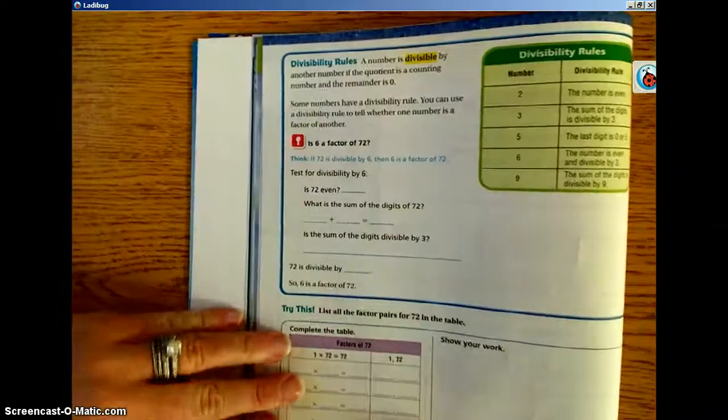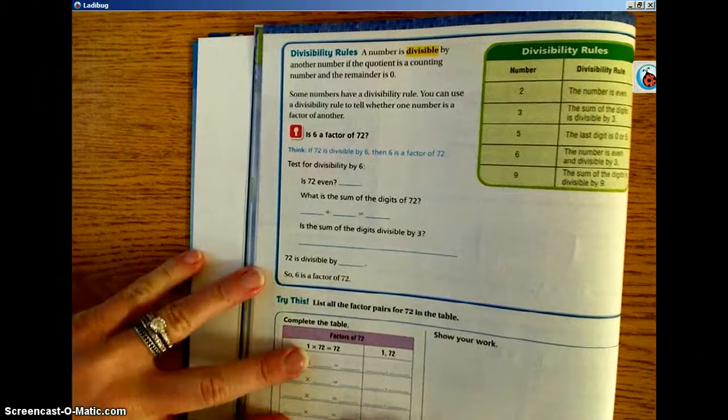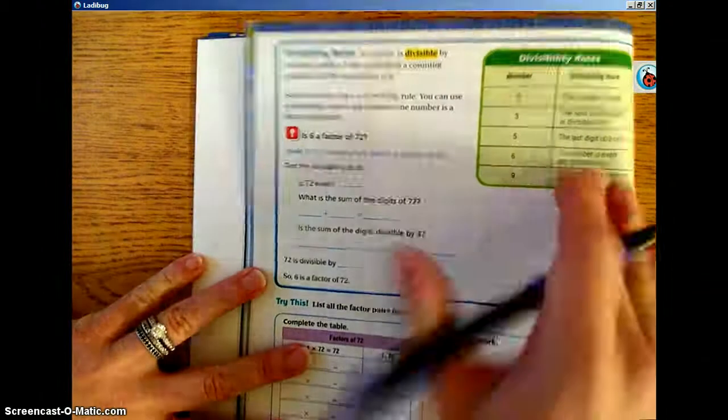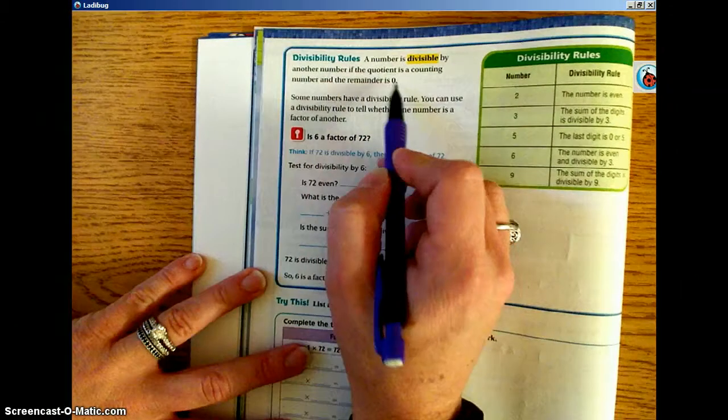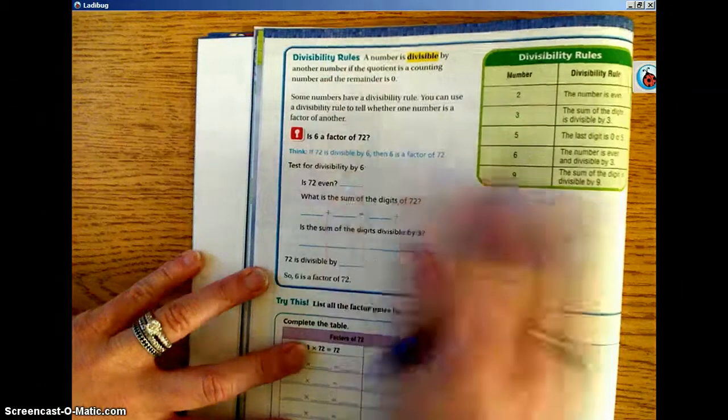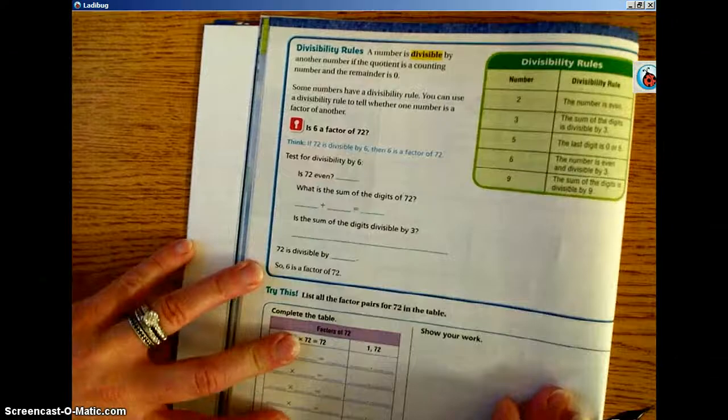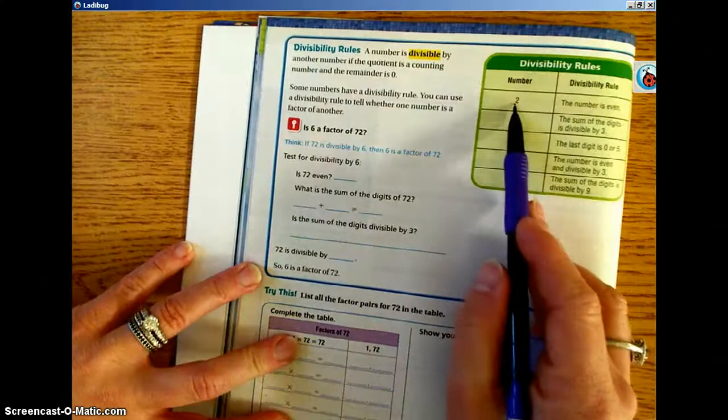Go ahead and turn to the next page. We're going to look at the box there, it says divisibility rules. A number is divisible by another number if the quotient is a counting number and the remainder is 0. It does give you some divisibility rules that are easy to see.